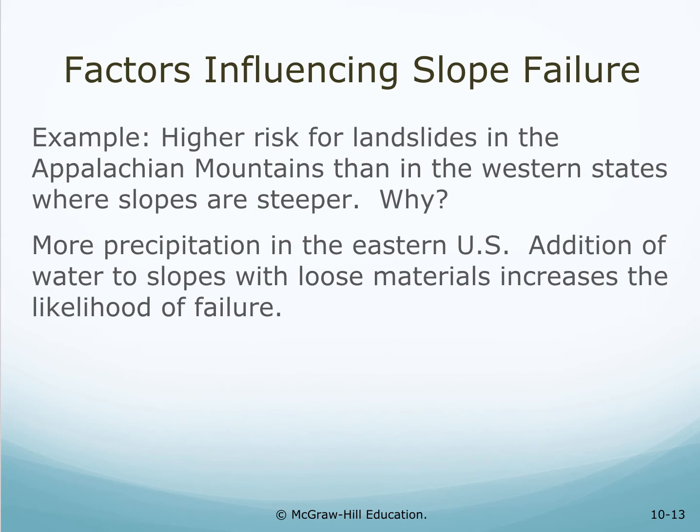An example: there's a higher risk for landslides in the Appalachian Mountains than in the western United States where the slopes are steeper. Why? There's more precipitation in the eastern United States. The addition of water to slopes with loose materials increases the likelihood of failure.